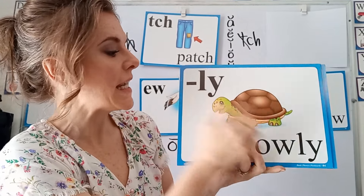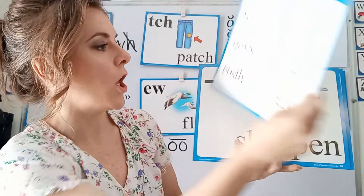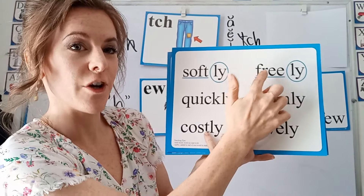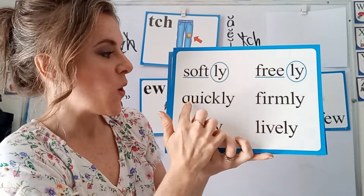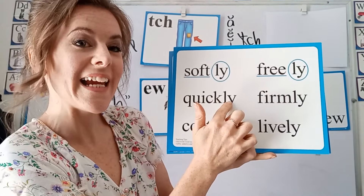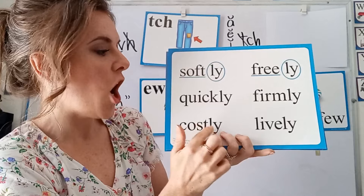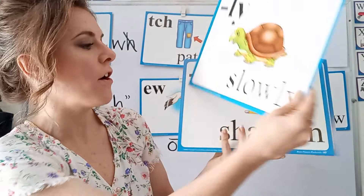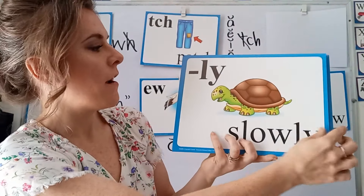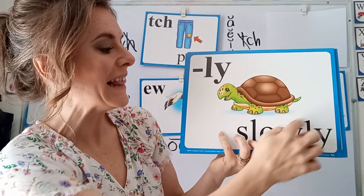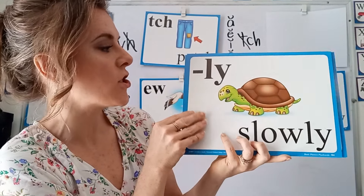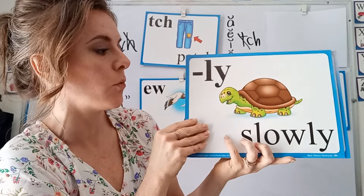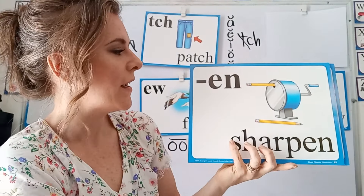Then we have the LY suffix in slowly: slowly, softly, freely, quickly, firmly, costly, and lively. This is our suffix LY in slowly — it is added to the end of a root word to make a new word.